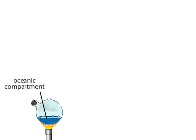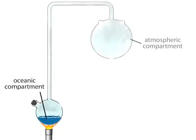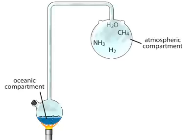They started with a solution of simple chemicals, which they called the oceanic compartment. The solution was heated to produce an artificial atmosphere. The atmosphere contained methane, ammonia, hydrogen, and water vapor, the gases that were thought to make up the Earth's early atmosphere.